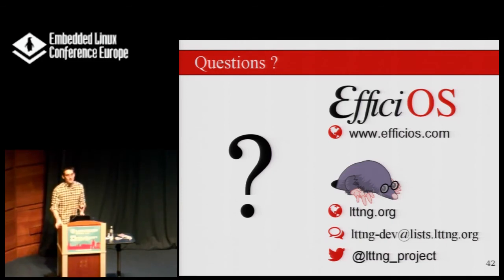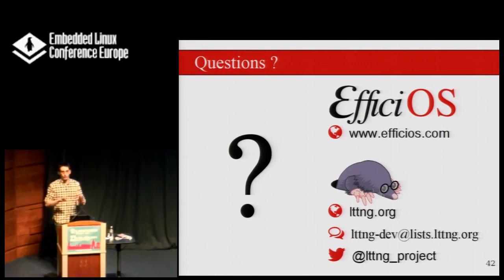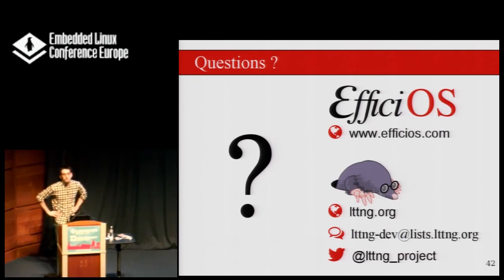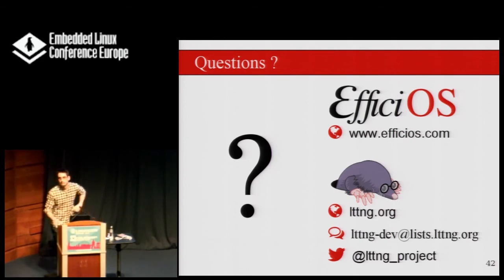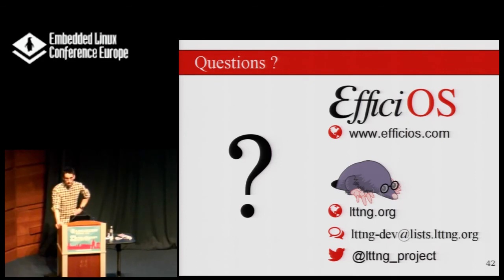I'm paid to work on LTTNG, which is why I work on it, but it's a nice project. I think LTTNG and Perf fill different use cases. If you want profiling information, Perf is an excellent tool for that. However, Perf is not tuned for high-performance, high-speed tracing, whereas LTTNG is tuned for that — that might be one of the main differences between the two.